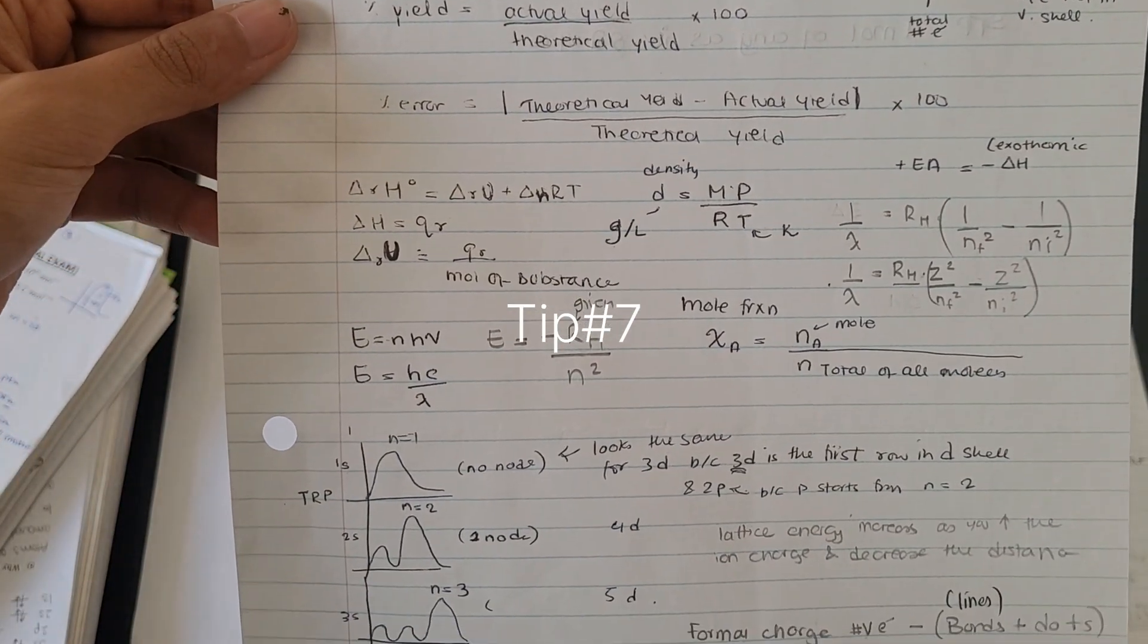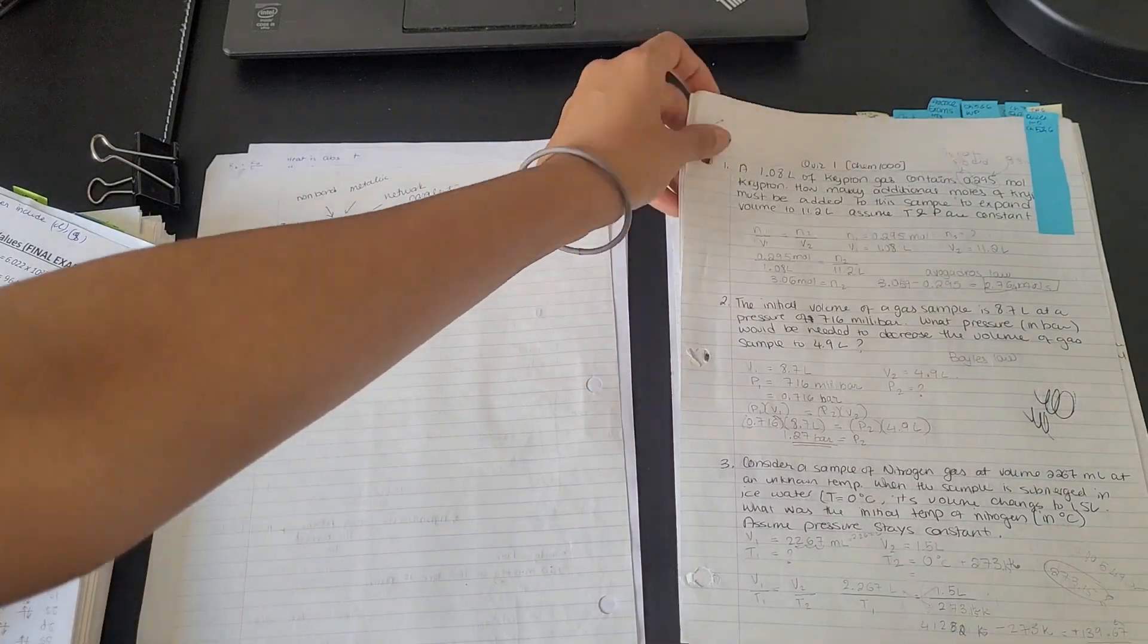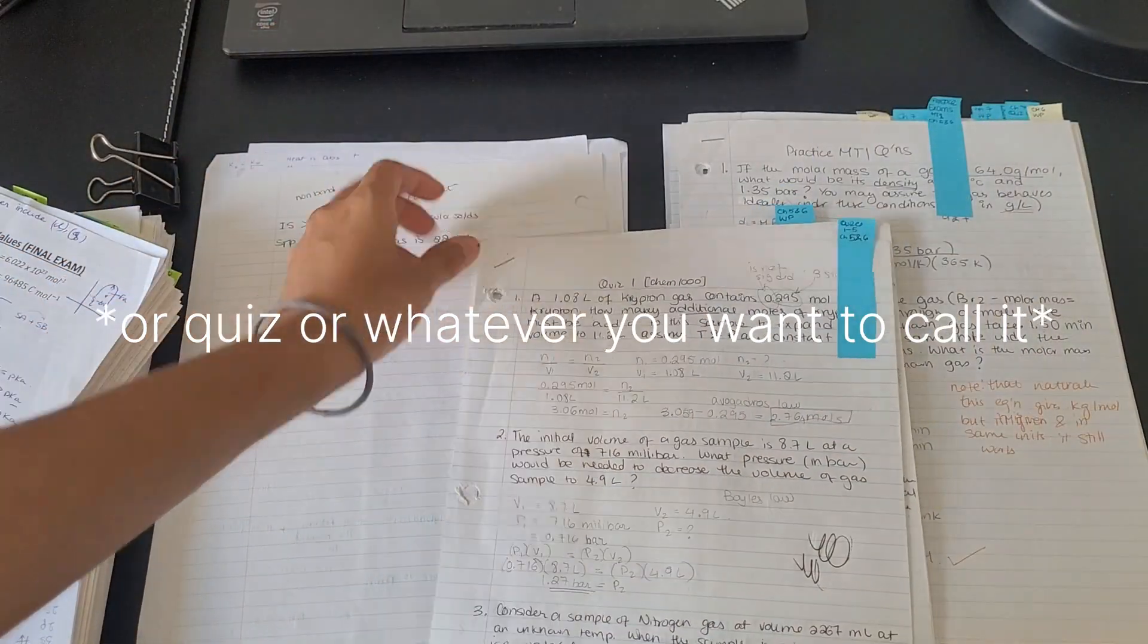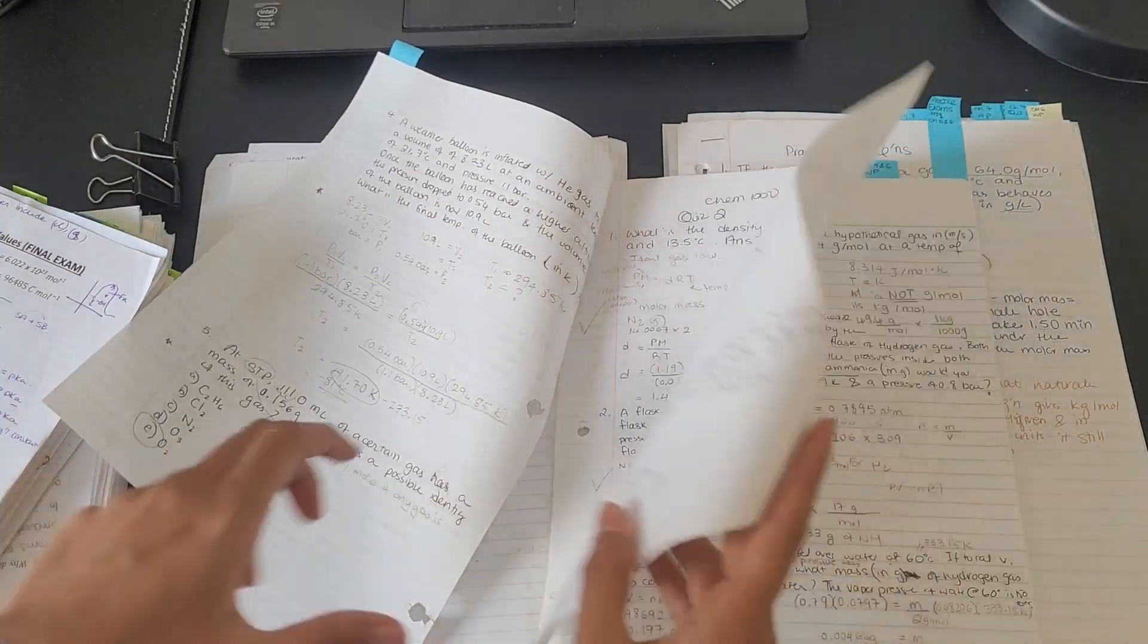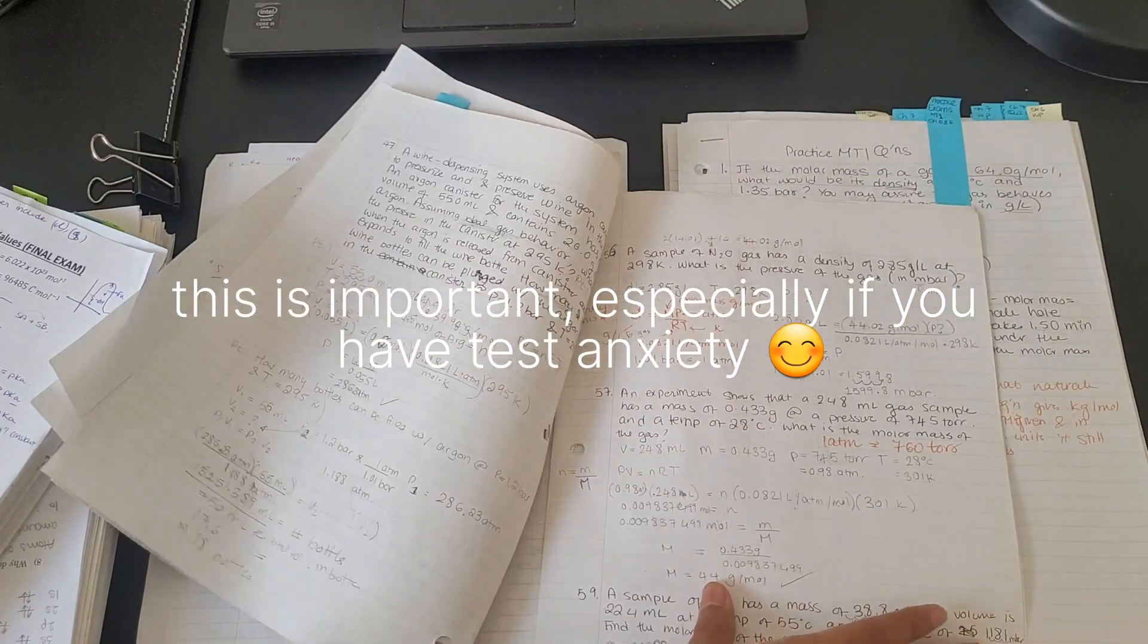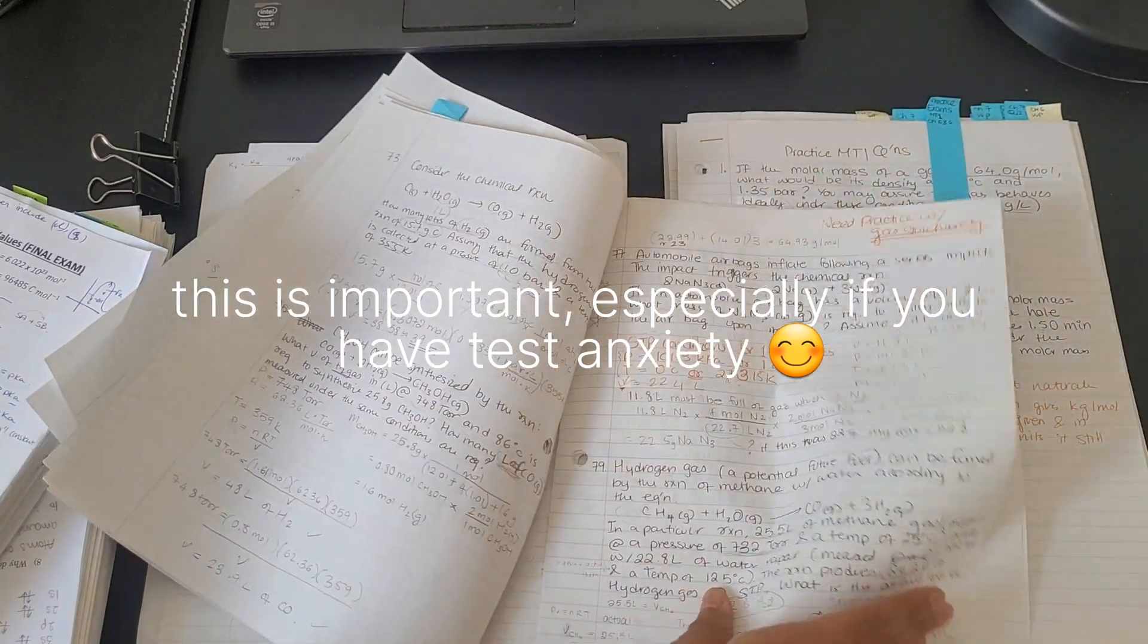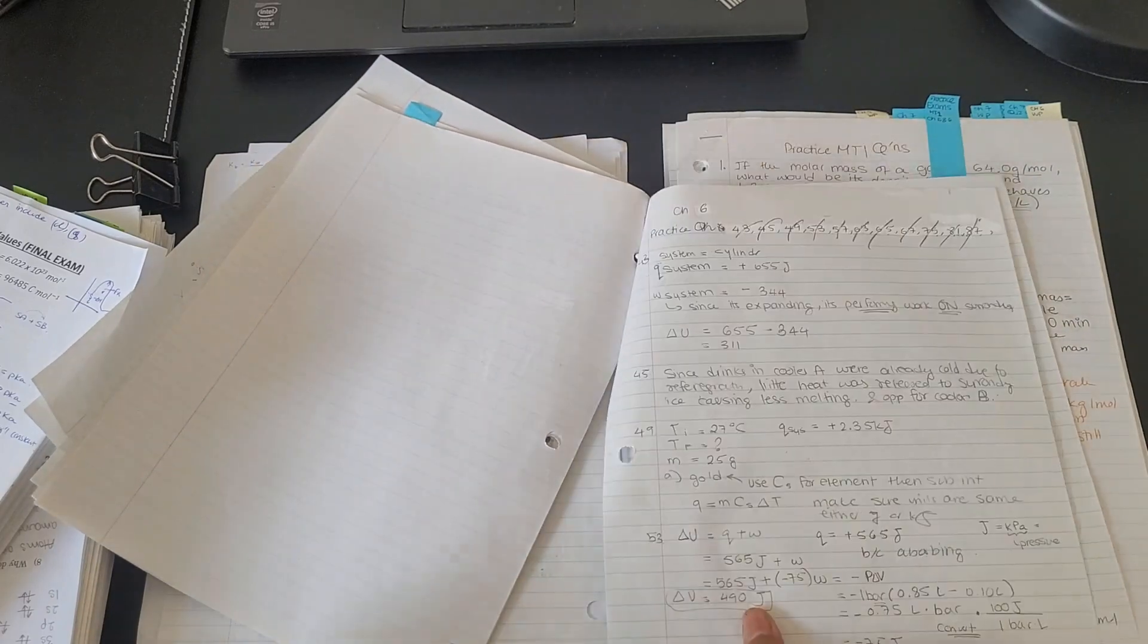Tip number seven or the final tip for this video is to create your own practice test for yourself. This allows you to practice active recall during the exam. This way, you're not frantically worried about, oh, how am I supposed to remember this formula? How do I solve this again? You're just calm. You've practiced being in the situation before, so you know how to handle it.